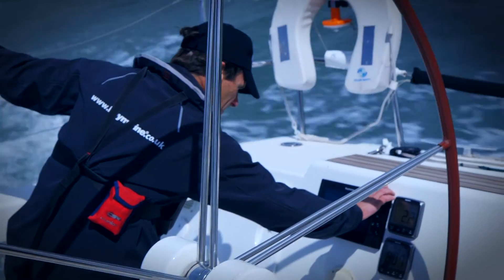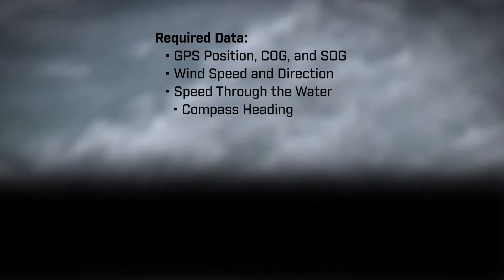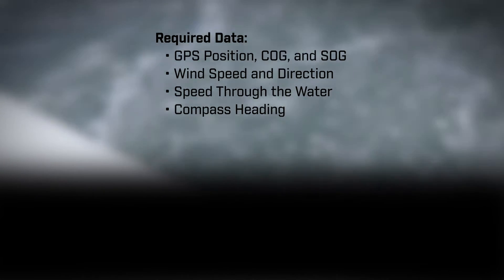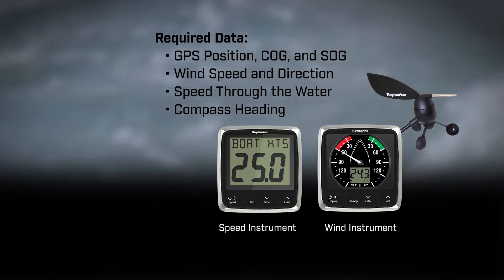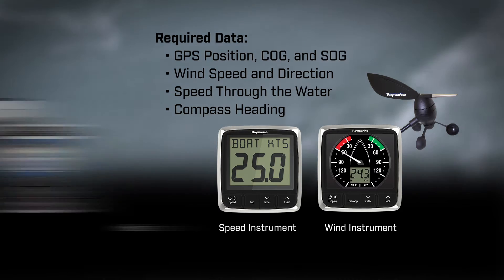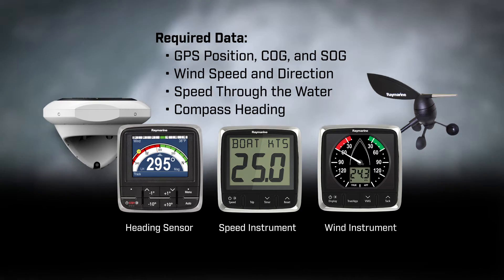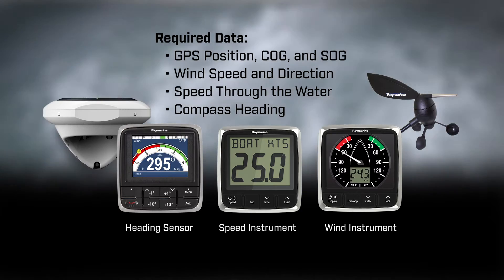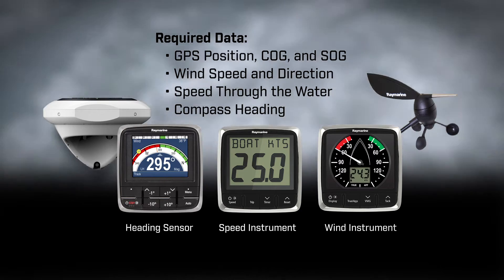In addition to your Raymarine MFD and GPS, you'll also need the following data sources connected to your network and MFD: a wind instrument, a speed instrument, and a heading sensor — which can be from a compass instrument or autopilot. With all these bits of data available on the network, you are ready to go.